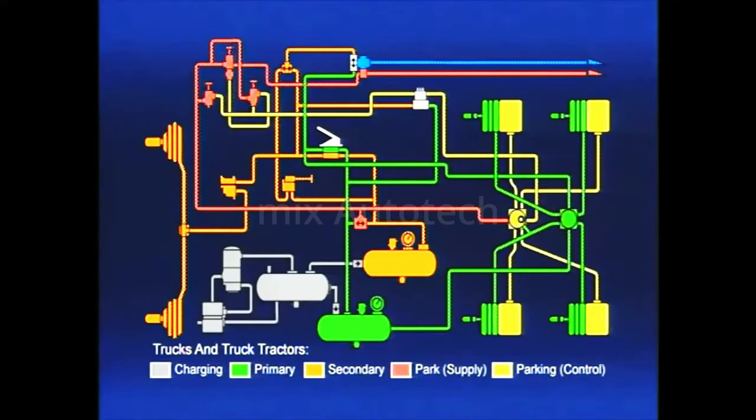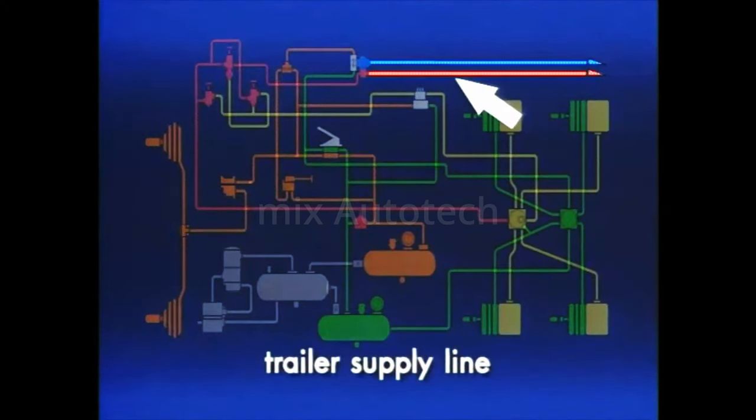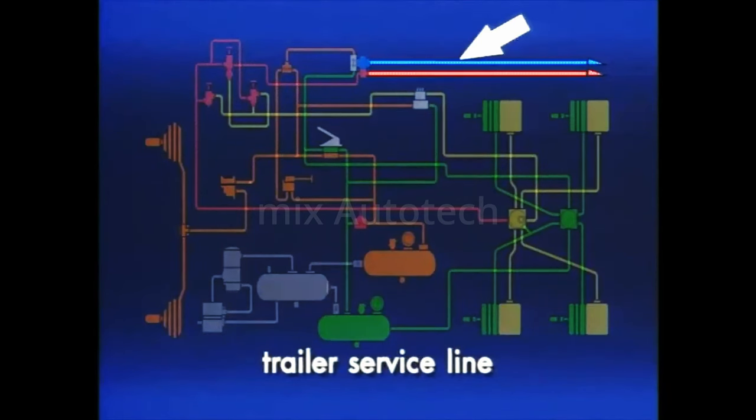In order to tow a trailer, a truck must be able to charge it with air and transmit brake signals to it. Two air hoses extend between the tractor and the trailer to fulfill this function. They are called the Trailer Supply and Trailer Service Lines.